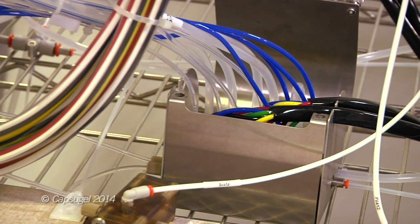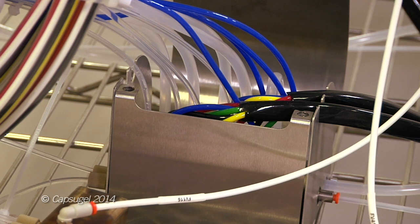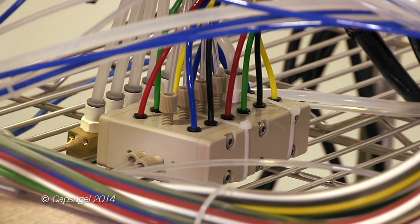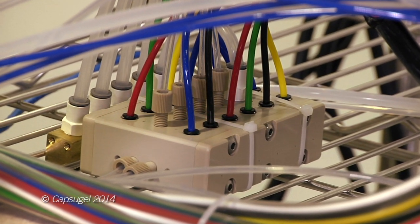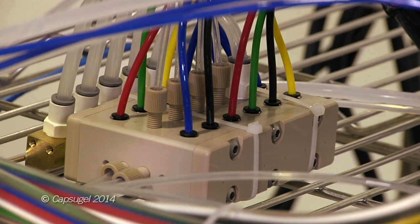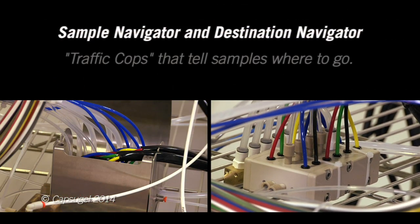The sample navigator organizes the fluids coming from the bioreactors. The destination navigator directs those samples to the right analytical device. All of the product contact lines are flushed and gas purged between each sample.